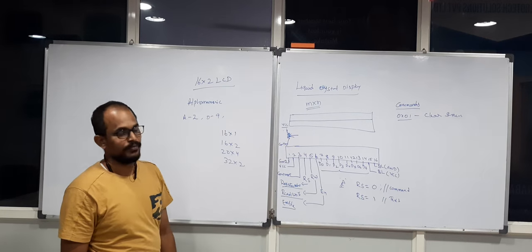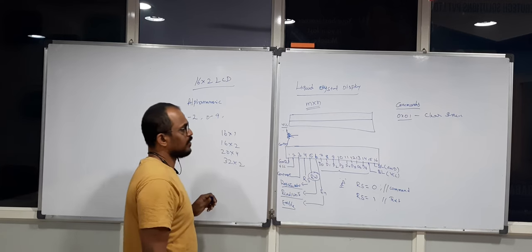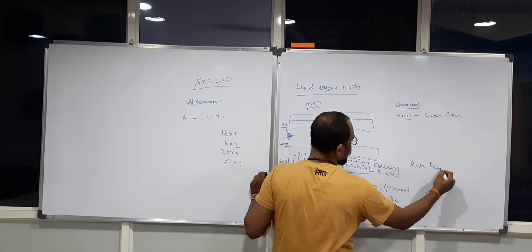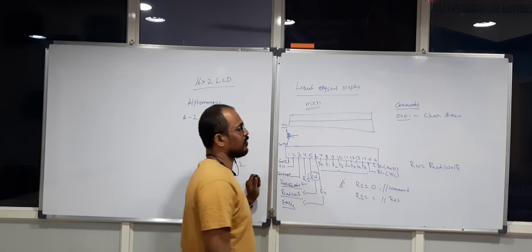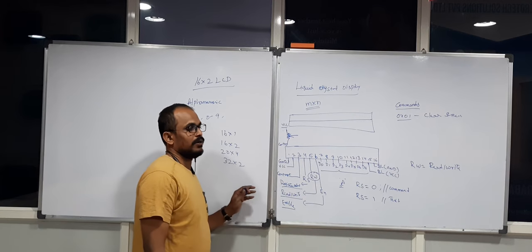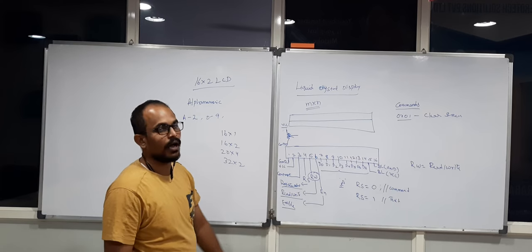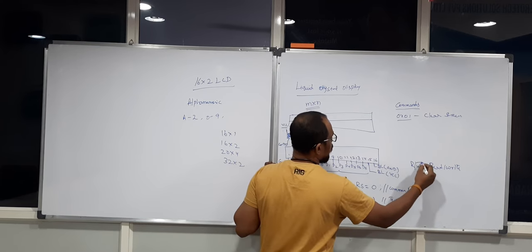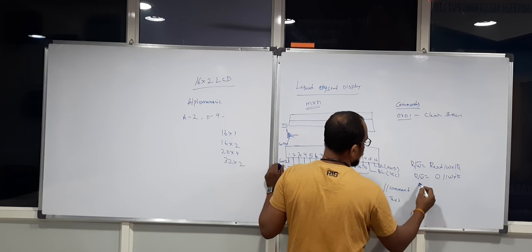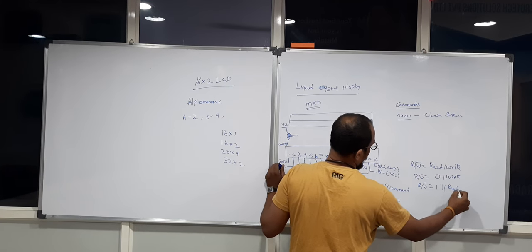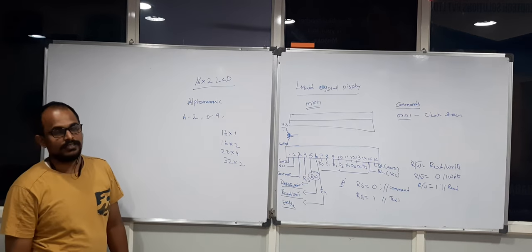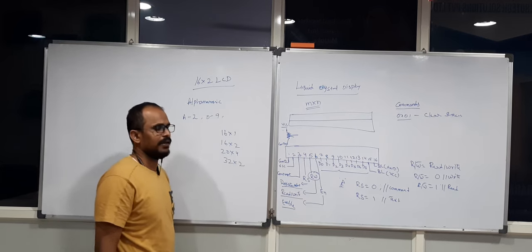The RW pin is another control pin for the LCD. RW gives you read or write operation. If you are sending data from the microcontroller to the LCD, you are doing a write operation. To do a write operation, keep RW logic 0. If you are doing a read operation from the LCD, make RW logic 1. In most cases you are giving data to the LCD, so RW remains logic 0.